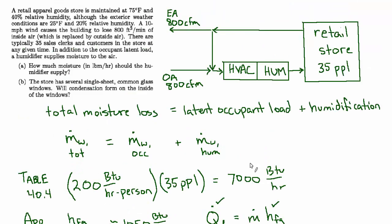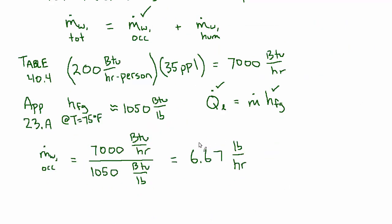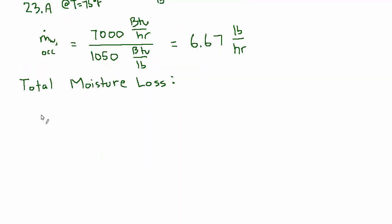So we just found this number, now we're going to find the total. However much is not generated by the occupants, the rest will have to be done by the humidification. So let's find out the total moisture loss now. The formula we want to use for this is that the mass flow rate of water, and this is the total now, is equal to the mass flow rate of air that's being removed from the space or added to the space.